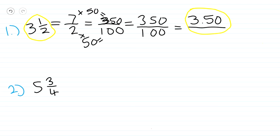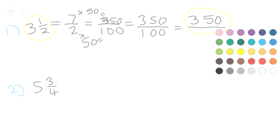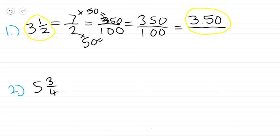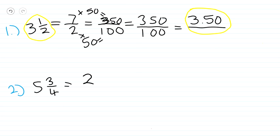Now for example number two, we're going to follow the same steps. We have to convert the mixed number five and three-fourths into an improper fraction. We multiply four times five, which is twenty, then add three, giving us twenty-three. So the numerator is twenty-three and the denominator stays as four.